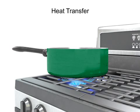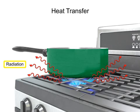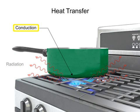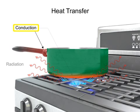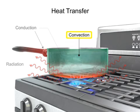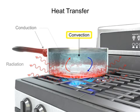Heat from the flame radiates in all directions. Conduction takes place with the transfer of heat from the burner to the metal pan. This heat transfer is also responsible for making the handle hot after a period of time. The water is heated by the process of convection, which is a circular movement caused by heated water rising and cooled water falling.